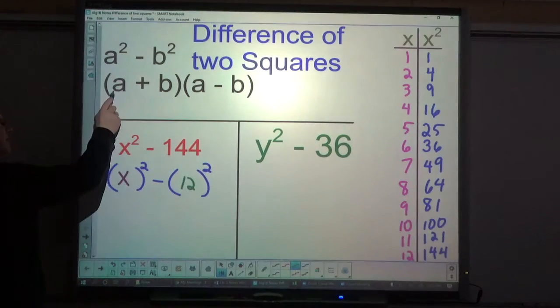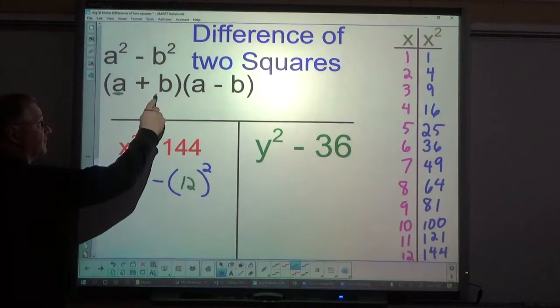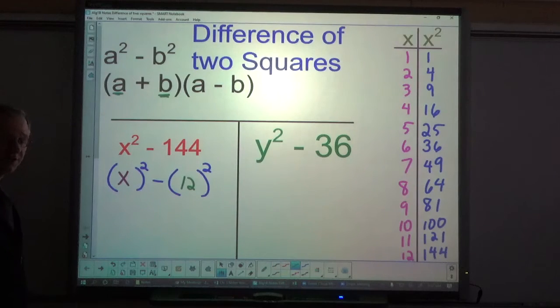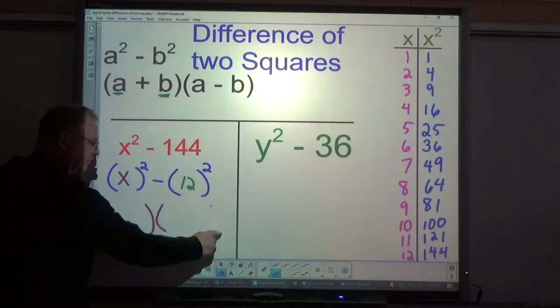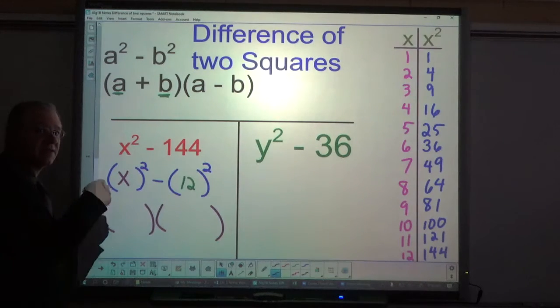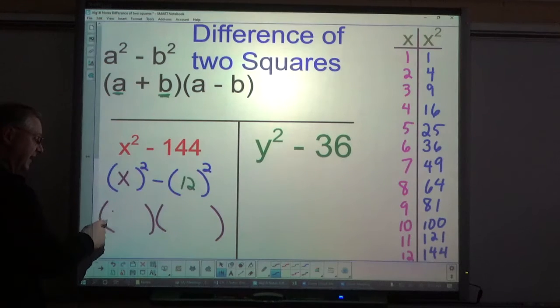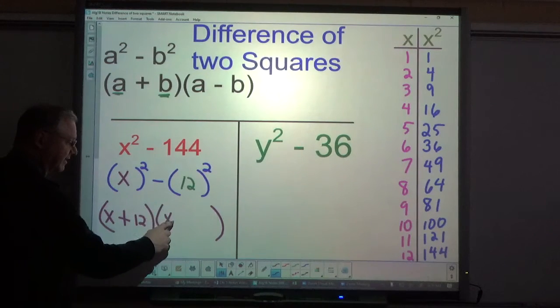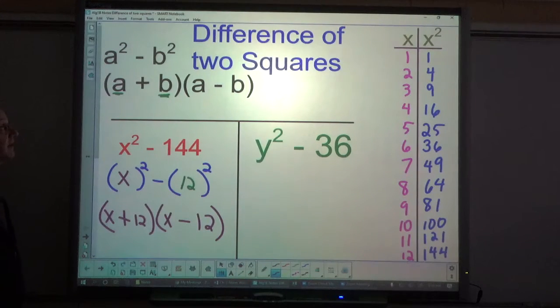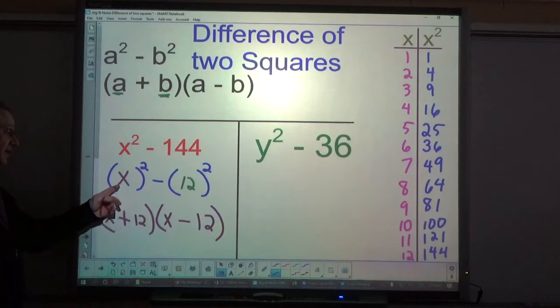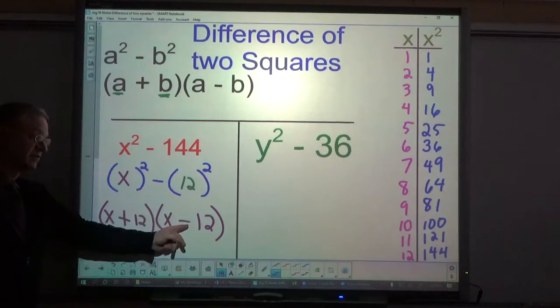So my x is the a expression and my 12 is my b expression in my formula. So when I go to factor this, it's always a plus and a minus. It doesn't matter which one comes first. X plus 12, x minus 12, and that's basic difference of squares. The x goes to the first spot of each, the 12 goes to the second spot of each, plus and minus.